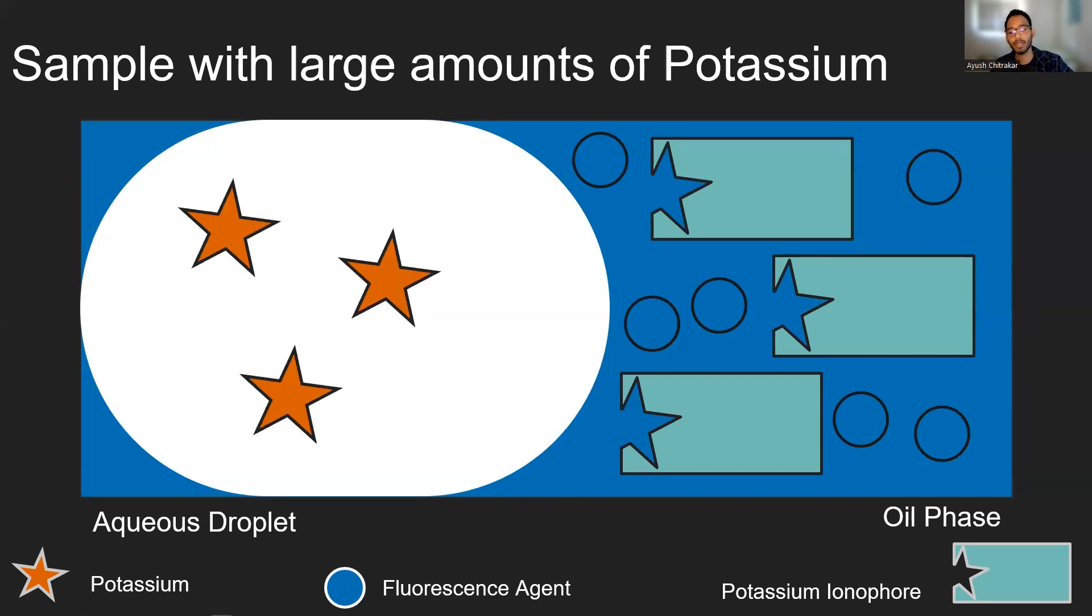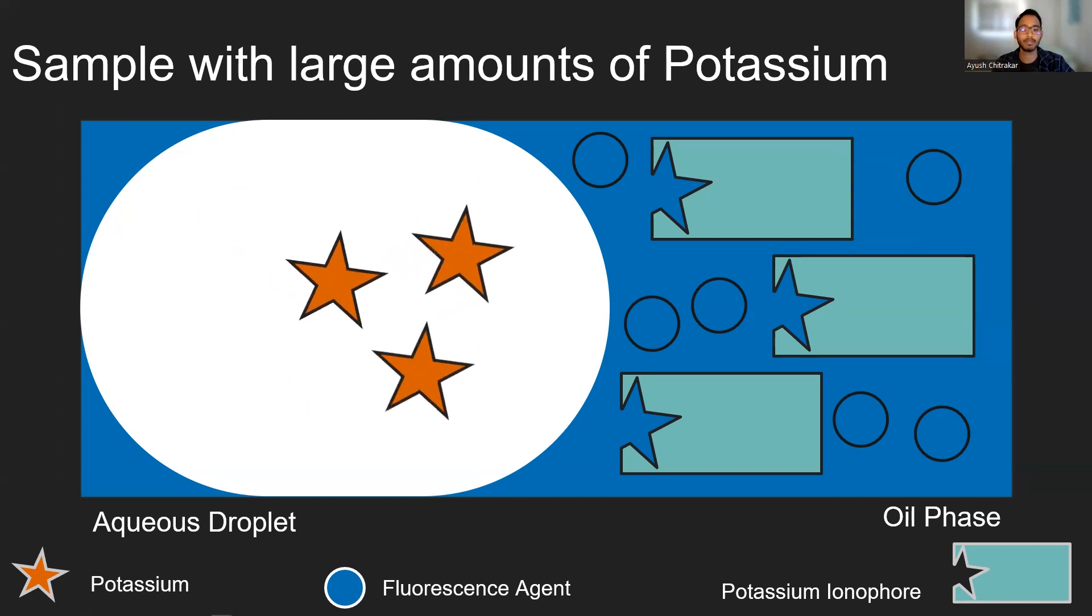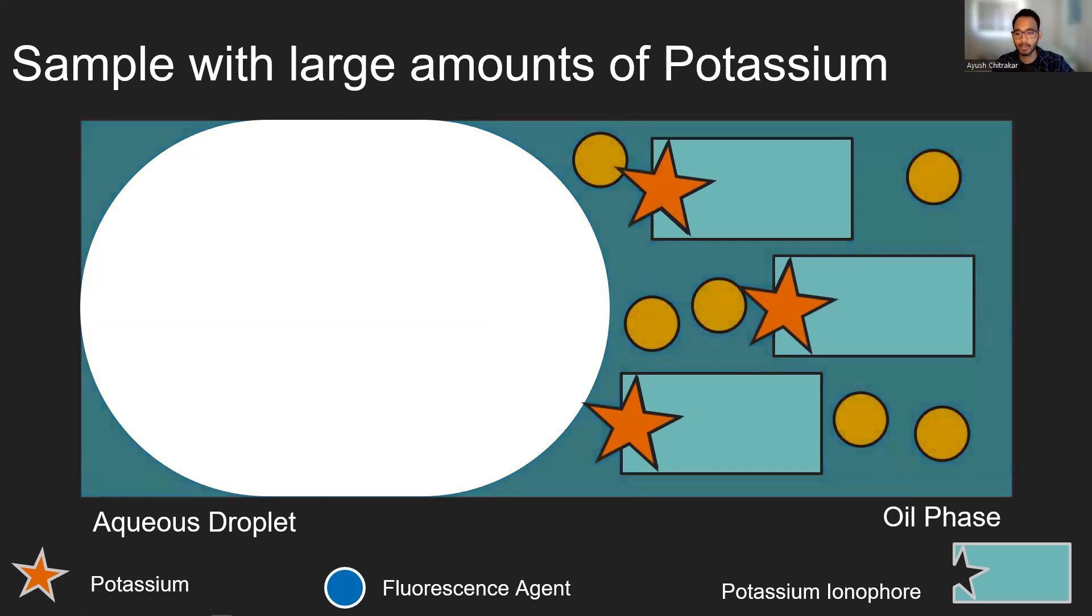When we have a sample with a large amount of potassium present, the same thing occurs. The potassium is able to bind to the potassium ionophore, which causes more of the fluorescent agents to fluoresce. This ultimately leads to a higher increase in the fluorescence or brightness of our oil phase, which we can correlate to more potassium in our solution.